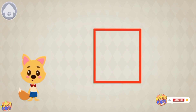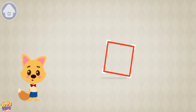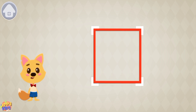This is a square. The square has four angles: one, two, three, four. That's why the square cannot roll like a circle. All sides of the square are equal.